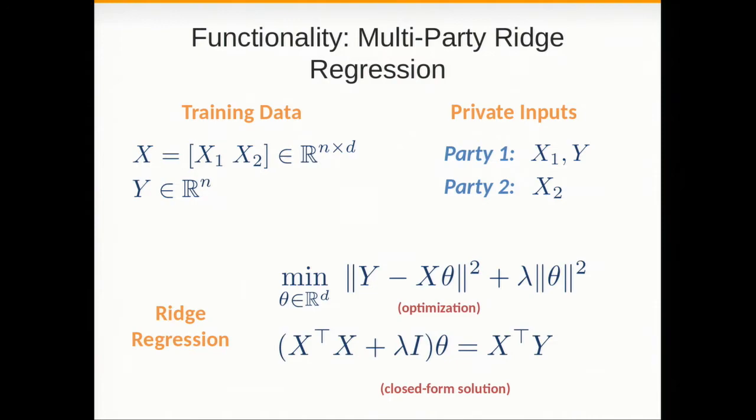All we need to do in ridge regression is solve this optimization problem that turns out has a closed form solution. So the parties have to compute this equation, construct this equation and solve it. It's very simple.